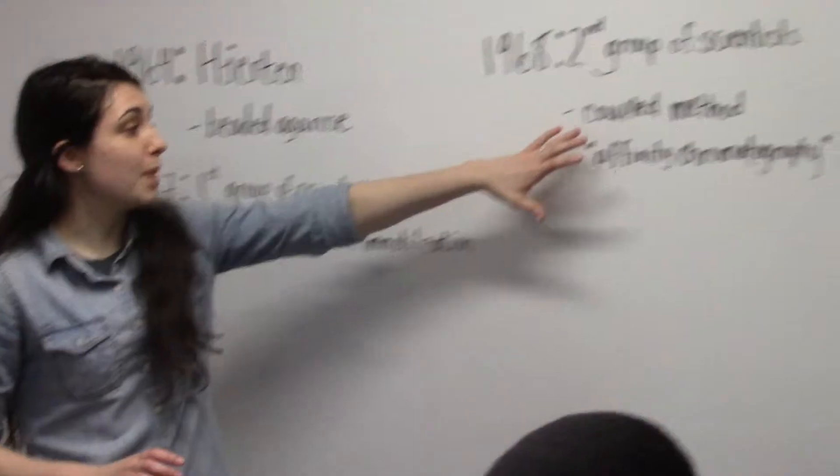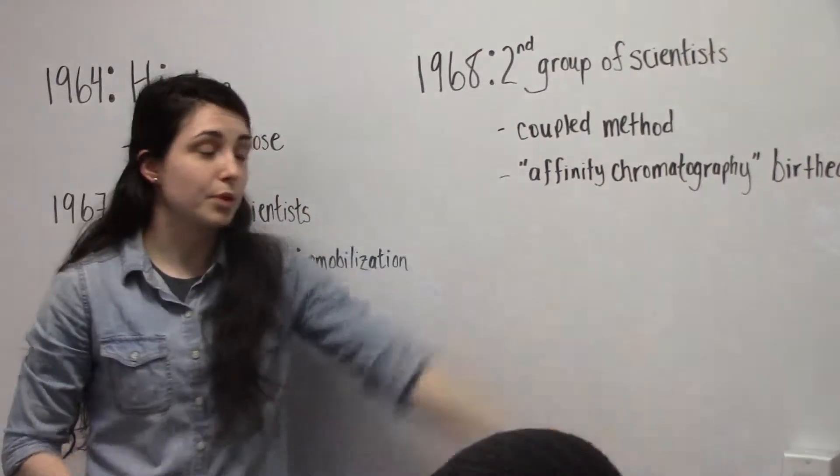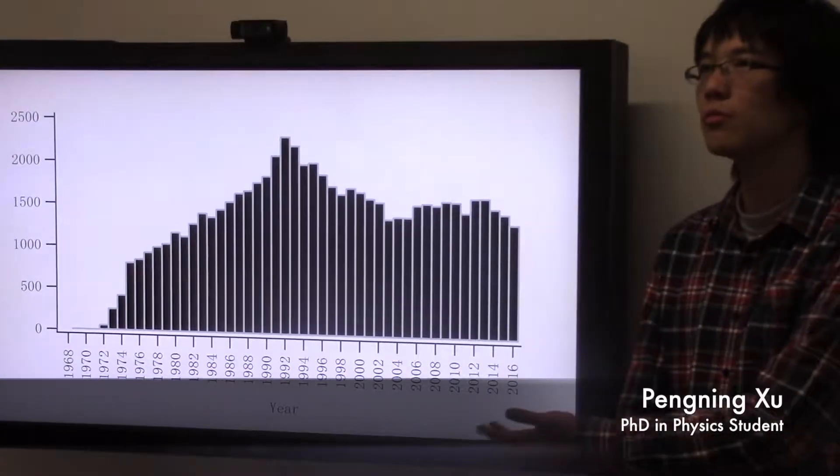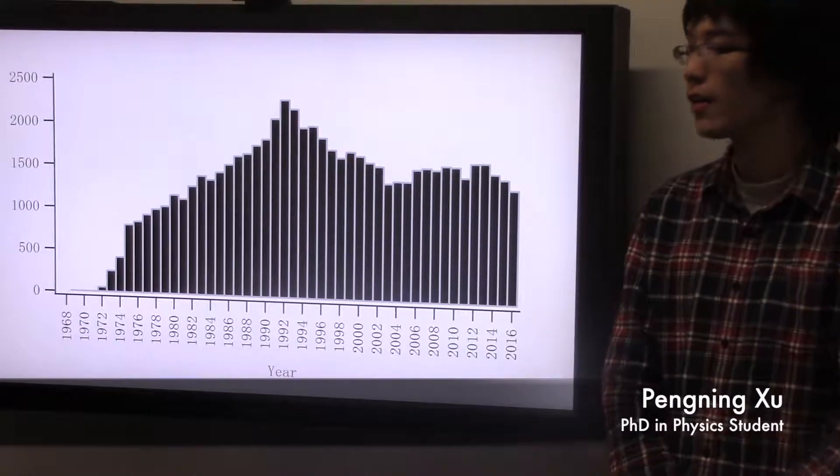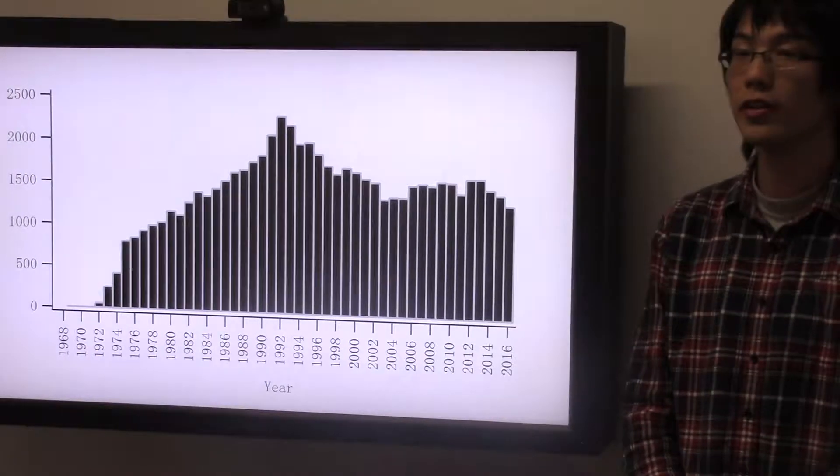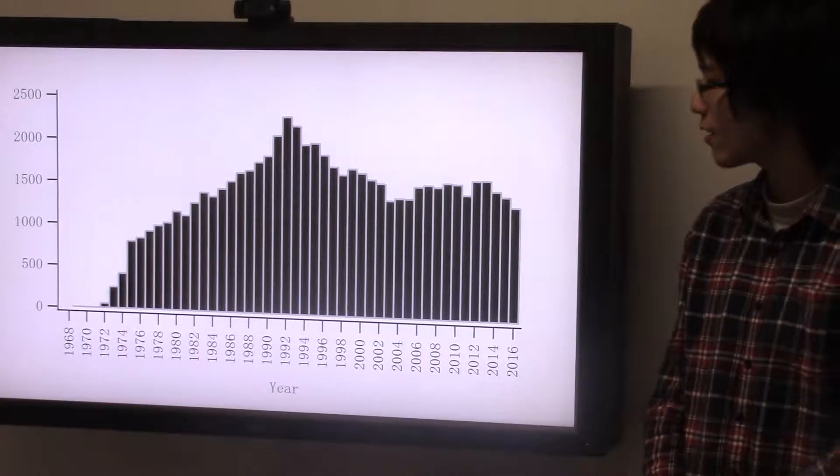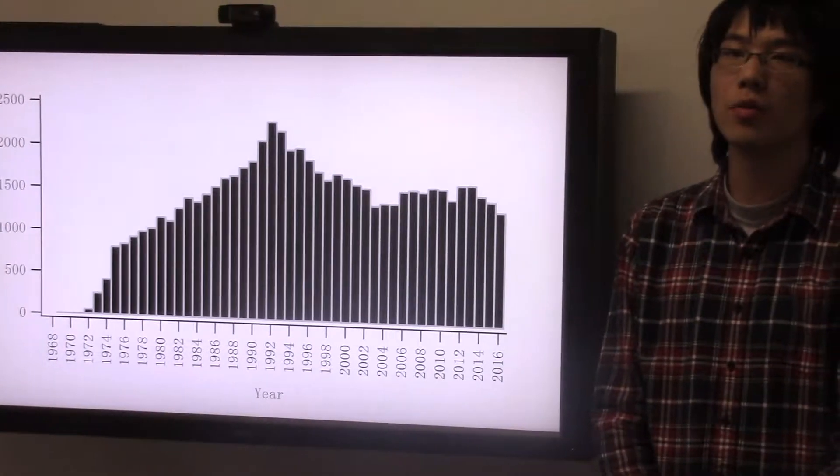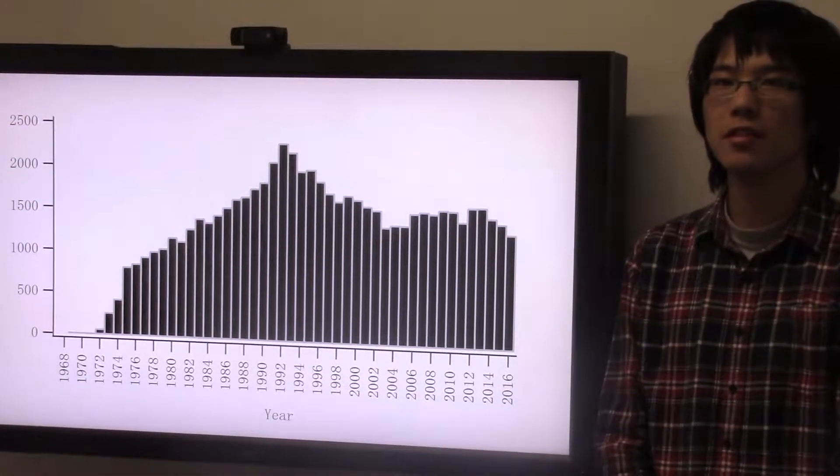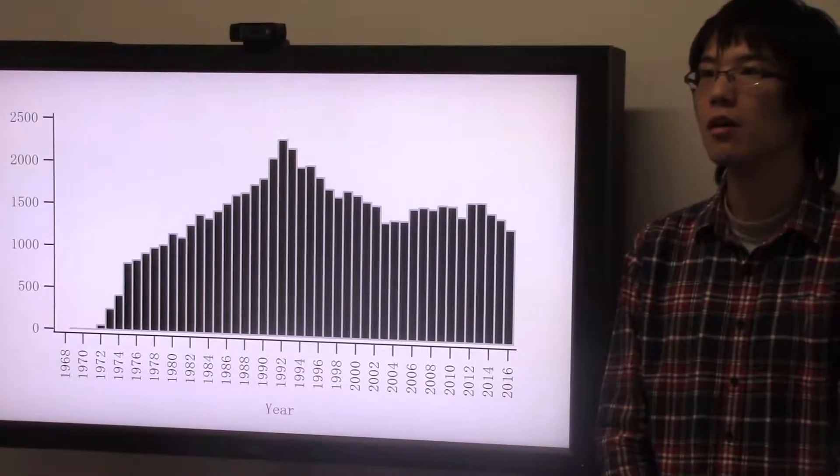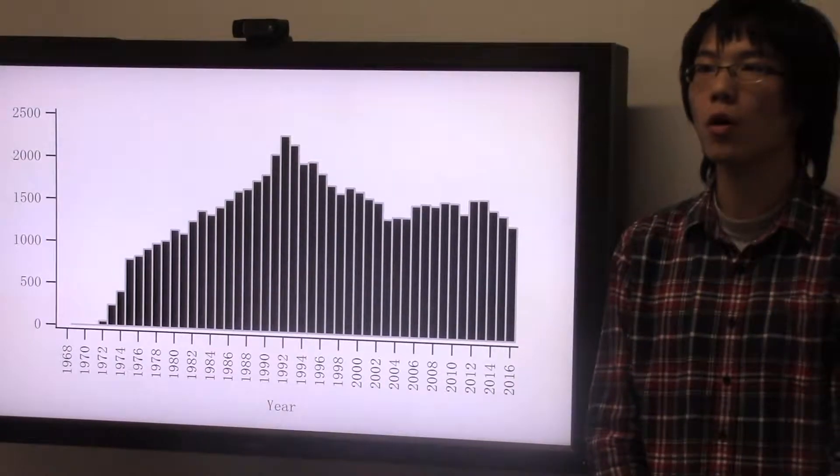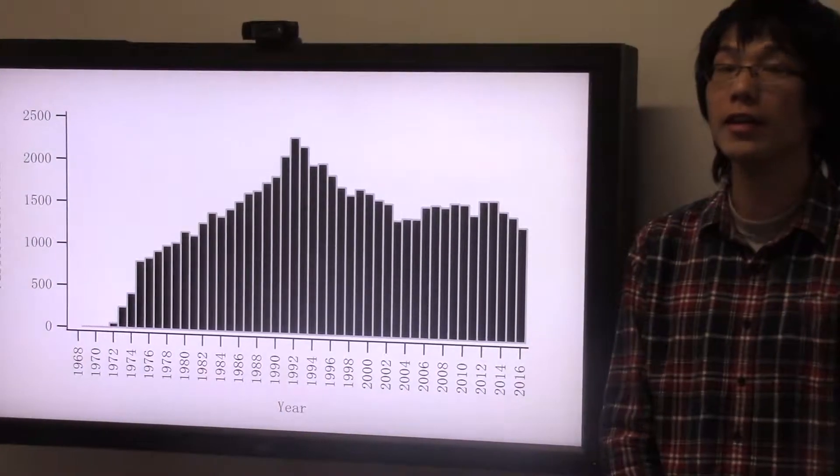A critical point happened in 1968 when another group of scientists coupled the beaded agarose development along with the cyanogen bromide immobilization method. This immobilized nuclease inhibitors to beaded agarose and allowed for several enzymes to be purified. By this new coupled method, the term affinity chromatography was birthed. From the histogram, the number of publications using the term affinity chromatography increased rapidly after 1968. There are still around 1300 affinity chromatography papers published during the last decade. Now with the widely spread concept of affinity chromatography, diversity in affinity ligands, immobilization method, and application provides inspiration in all fields of scientific research. We will look at some people who are using affinity chromatography right here in NC State.